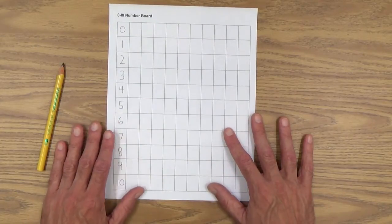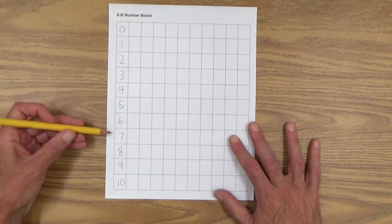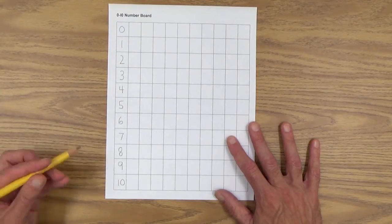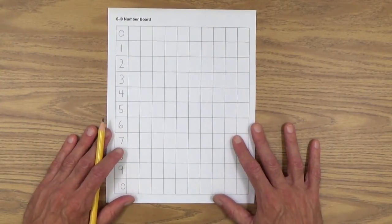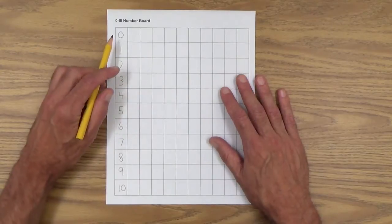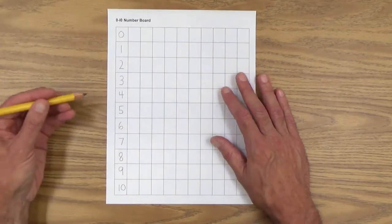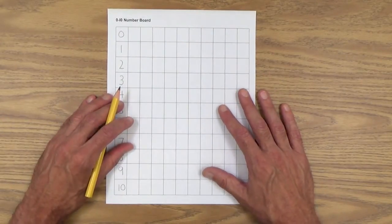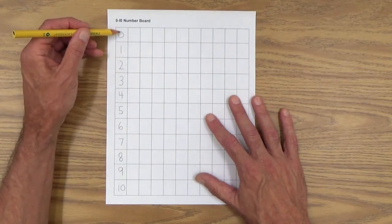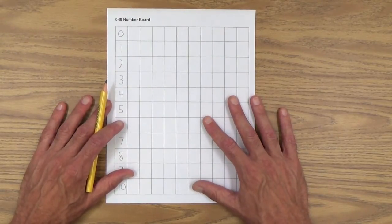So we're going to start with the 0 to 10 number board. As you can see, I've already filled in the numbers consecutively down this column from 0 to 10. And here's the way you want to start this lesson with your child. You can say, watch what I do. I'm going to look at the number and then I'm going to write in these boxes with X's. I'm going to count out that number and it's kind of hard to explain. You're just going to have to show them. Zero, am I going to make any X's at all?